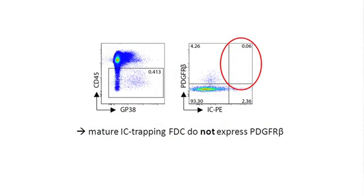One specific marker of pericytes is the beta chain of the receptor for platelet-derived growth factor, PDGFRβ. So we asked: are follicular dendritic cells positive for PDGFRβ? It turned out, unfortunately, that this was not the case. But then we thought: maybe the pericytes make PDGFRβ, but when they mature and become follicular dendritic cells, they may actually lose expression of this marker. This image shows that the mature follicular dendritic cells are indeed negative for PDGFRβ.